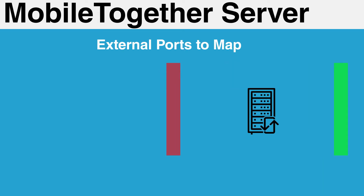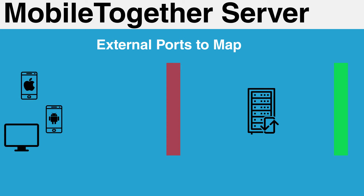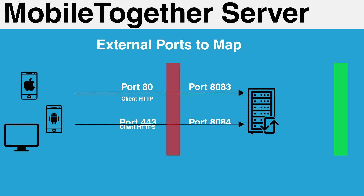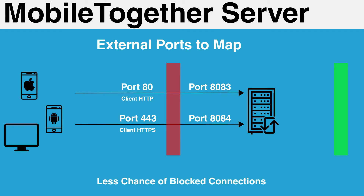Externally, there are two ports that will need to be mapped. Clients connecting to MobileTogether server will need to connect using either an HTTP or HTTPS connection. We recommend mapping port 80 externally to port 8083 internally for HTTP, and port 443 externally to port 8084 internally for HTTPS. Mapping these connections to commonly used ports will reduce the likelihood of connections being blocked by other firewalls outside your network.